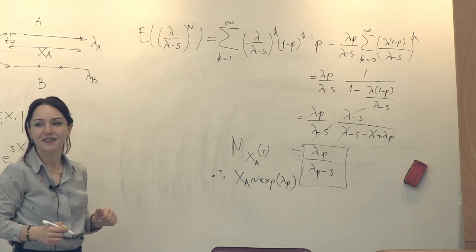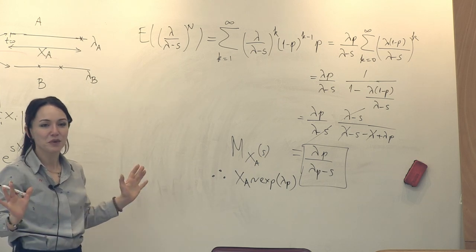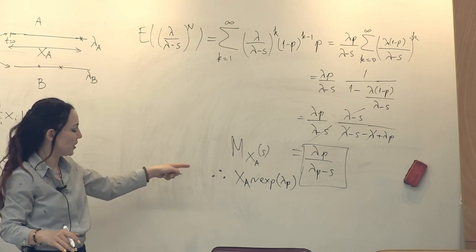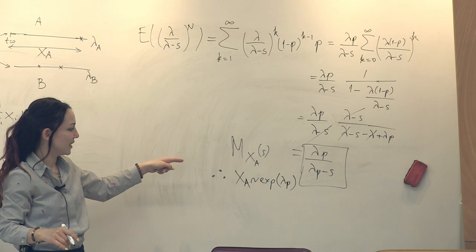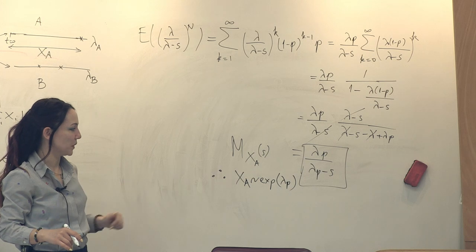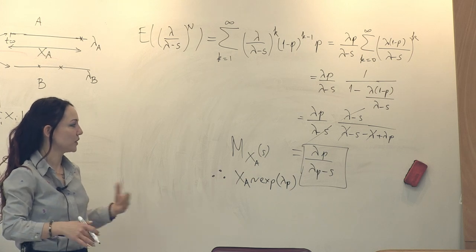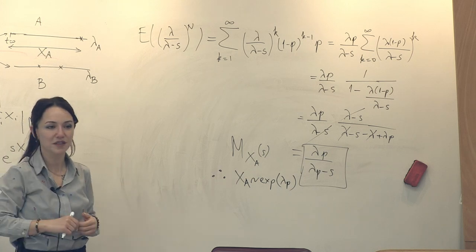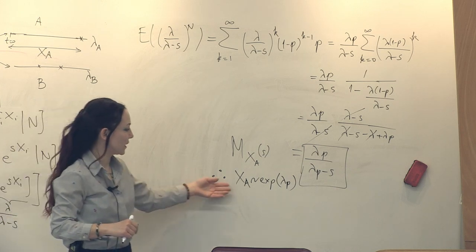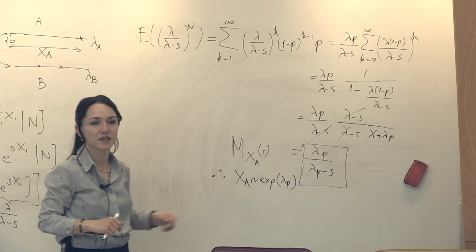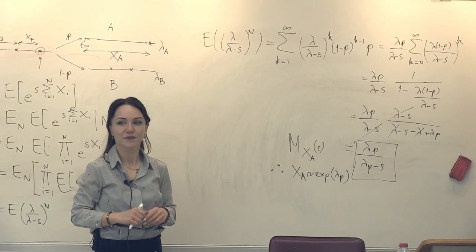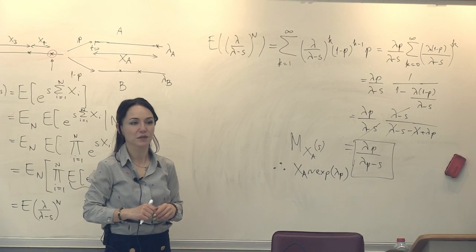Since the inter-arrival times of process A are exponentials with rate λp, and the i.i.d. property is inherited from the original process, we conclude that the resulting decimated process A is also Poisson with rate λp.